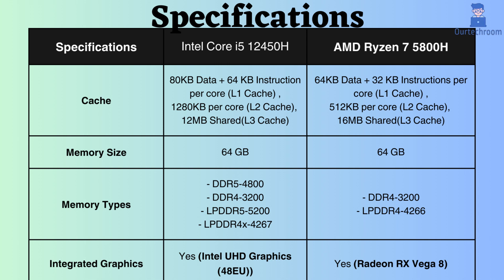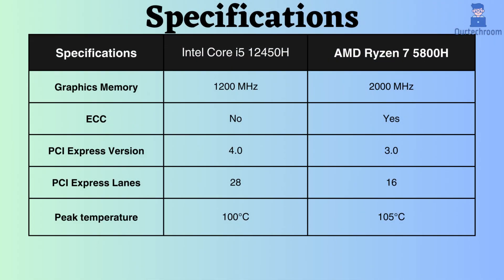Both processors support integrated graphics, with the Ryzen 7 5800H boasting a higher boost graphics frequency than the Intel Core i5-12450H, making it advantageous for graphical tasks. The Ryzen 7 5800H supports ECC, so for critical systems like workstations and servers this Ryzen performs better, while the Intel Core does not support ECC. The Intel processor supports PCIe version 4 and has 28 PCIe lanes, whereas the AMD processor supports PCIe version 3 and has only 16 PCIe lanes.